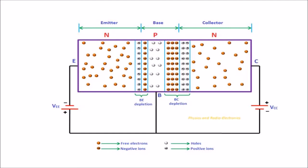Thus, free electrons flowing from emitter to base and holes flowing from base to emitter constitute electric current. The actual current is carried by the free electrons flowing from emitter to base; however, we follow the conventional current direction which is from base to emitter. The free electrons flowing from emitter to base will combine with the holes in the base region. Similarly, the holes flowing from base to emitter will combine with the electrons in the emitter region. From this figure, it is seen that the width of the base region is very thin. Therefore, only a small percentage of free electrons from the emitter region will combine with the holes in the base region.